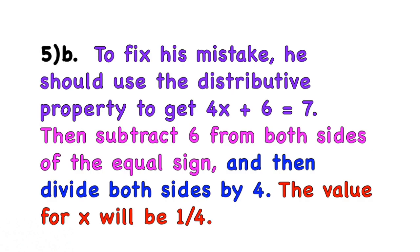B. To fix his mistake, he should use the distributive property to get 4X plus 6 equals 7. Then, subtract 6 from both sides of the equal sign, and then divide both sides by 4. The value for X will be 1 fourth.